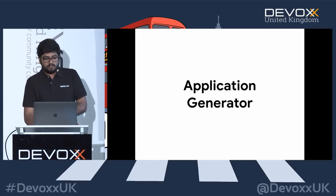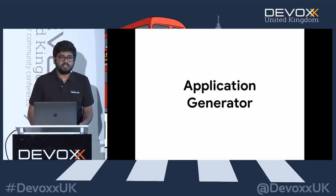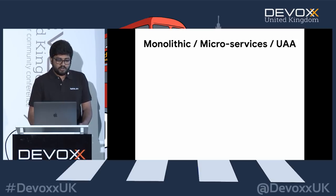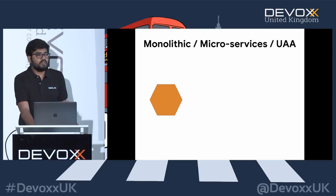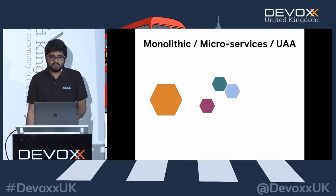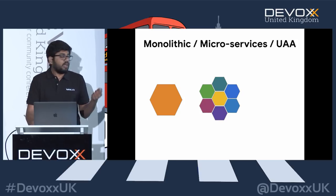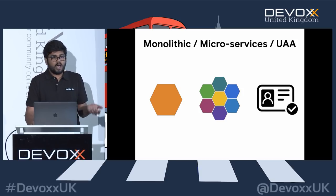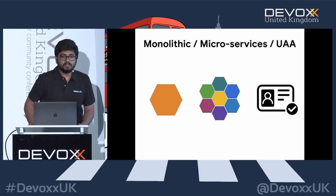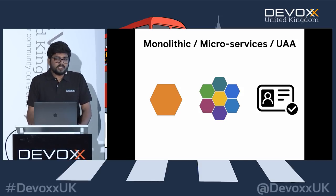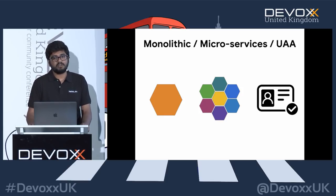So what does JHipster do? We are basically an application generator combining Spring Boot with Angular or React. We provide options to generate a monolith, microservices, or a UAA application. UAA is a User Authorization and Authentication service that helps to authorize and authenticate users — and you can generate that with JHipster itself.